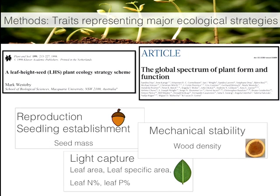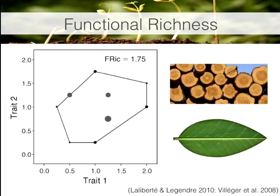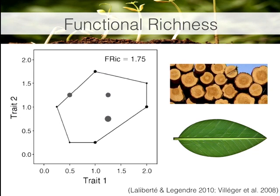With all that information, we estimated the functional diversity of the communities. One metric we used was functional richness, which estimates the total range of functions for one community. For example, if we measure two traits — wood density and leaf area — we can plot species positions in a bidimensional space and enclose them in a minimum convex polygon. The area of that polygon represents the functional richness of the community. With more than two traits, we add more dimensions and calculate a volume of functional richness.